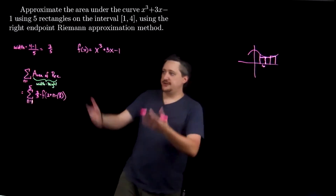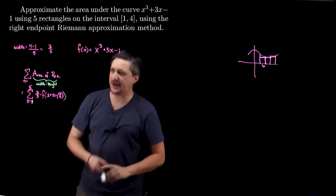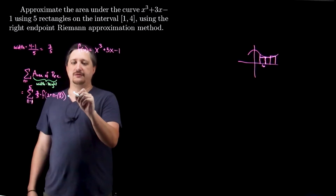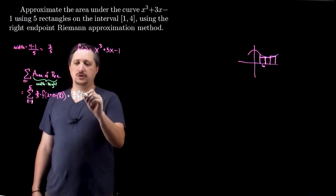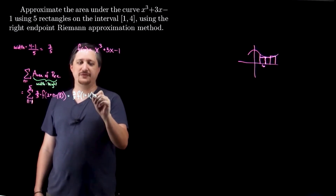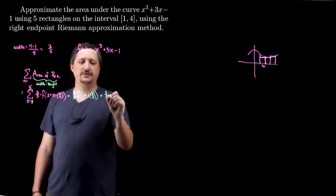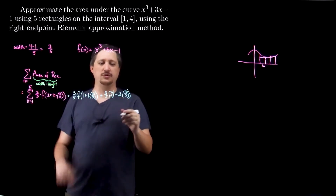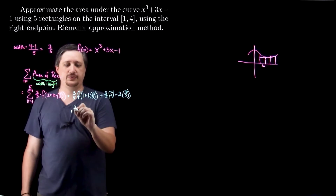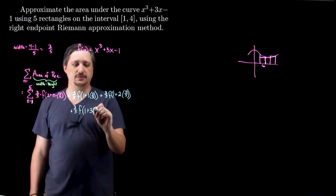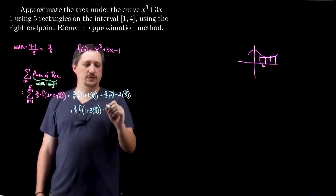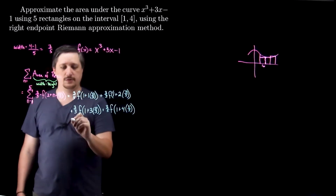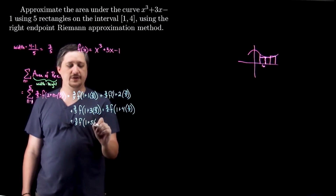Now I want to calculate this. I'll write out what the sigma is literally doing. That's 3 fifths times f of (1 + 1 × 3/5) plus 3 fifths times f of (1 + 2 × 3/5) — because I'm increasing n by 1 — plus 3 fifths times f of (1 + 3 × 3/5) plus 3 fifths times f of (1 + 4 × 3/5) plus 3 fifths times f of (1 + 5 × 3/5).